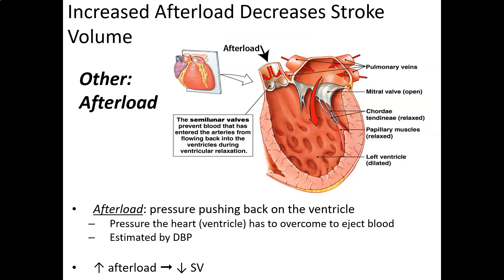The next factor is afterload — the pressure outside the heart pushing back on the ventricle, or the pressure the heart must overcome to eject blood. A good estimate is the diastolic blood pressure. For example, with a blood pressure of 120/80, afterload would be approximately 80 mmHg. Notably, afterload is one of the few variables that is inversely proportional to stroke volume — if afterload increases, stroke volume decreases.